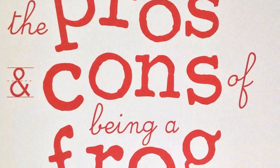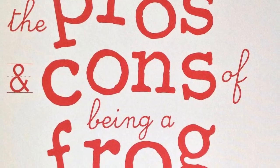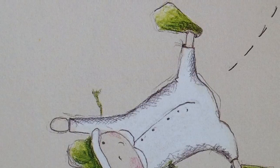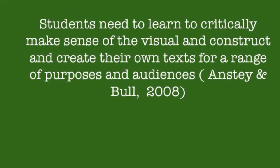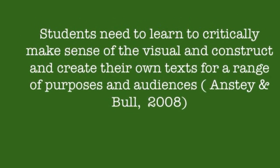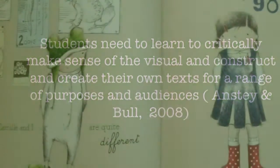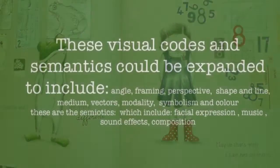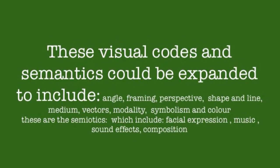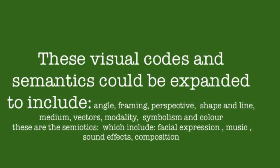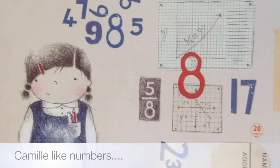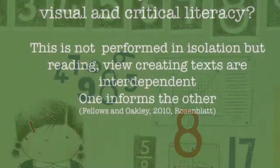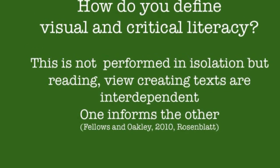A grade 1-2 writing lesson based on the pros and cons of being a frog by Sue DiGennaro. Have you ever had a friend who is different to you? The character in the story likes to dress up, but finding the right animal to dress up as wasn't easy. It was Camille who came up with the solution of being a frog — a wonderful story about loyal friends and how to keep them.